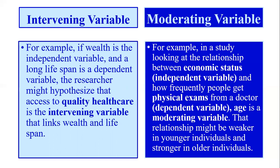Wealth is independent and long lifespan is dependent. The intervening variable here is quality of healthcare. For example, consider a multi-billionaire — his wealth is independent and his long lifespan is dependent. He has a long lifespan because he uses luxuries, organic things, and healthcare, which helps him live long. He has more wealth and uses the luxuries of life as well as adopting healthcare and fitness routines. So healthcare intervenes the wealth and long lifespan relationship.